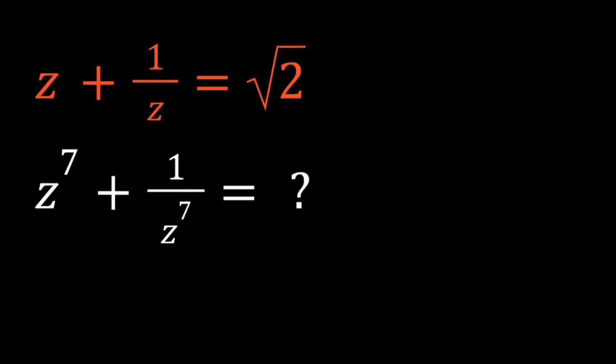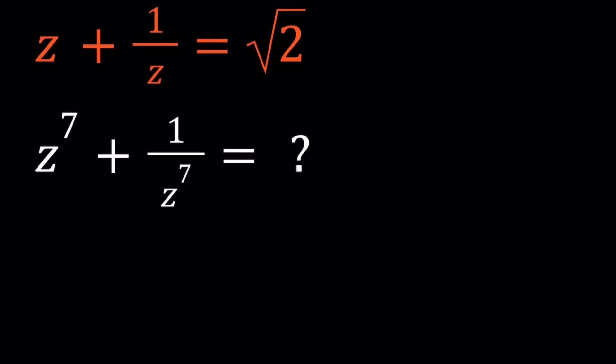Hello everyone. In this video, we're going to be evaluating an algebraic expression. We're given z plus 1 over z, and we're supposed to evaluate z to the 7th power plus 1 over z to the 7th power. I'll be presenting two methods, and let's start with the first one.